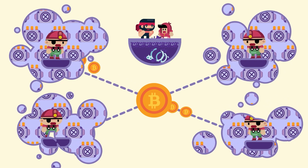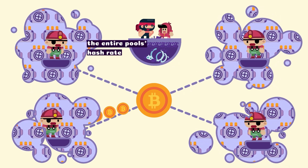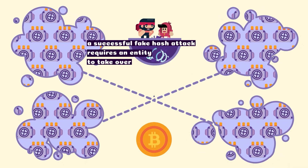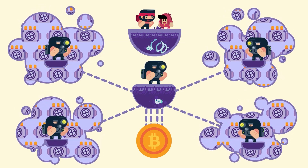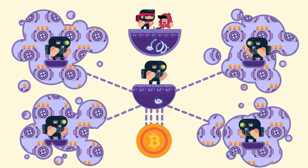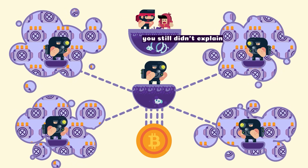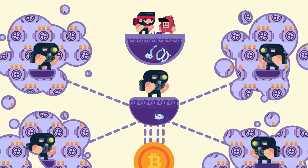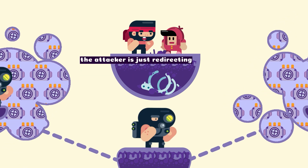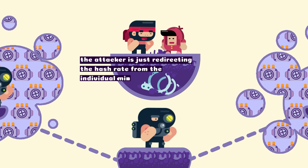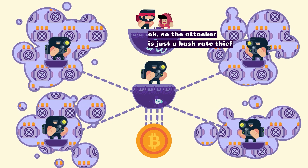Bitcoin miners can combine their hash rate into mining pools. By doing so, miners win Bitcoin rewards more frequently. So mining pools are places miners go to work together, and by working together they have a higher chance of getting rewarded. The people in charge of mining pools can direct the entire pool's hash rate. A successful fake hash attack requires an entity to take over several of the largest mining pools and redirect the combined hash rate. It's called fake hash rate because the attacker doesn't actually own the mining pool's hash rate — the attacker is just redirecting the hash rate from the individual miners in the pools. So the attacker is just a hash rate thief. Precisely.